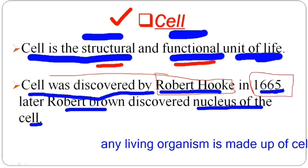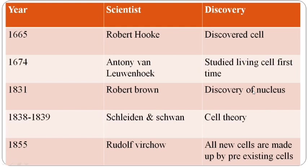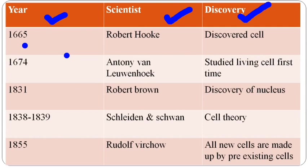We are doing this revision because if we don't cover the basics, the next chapter will not be understood, and the next chapter will be totally based on tissues. The first discovery was 1665 — what was discovered by Robert Hooke? Cell.